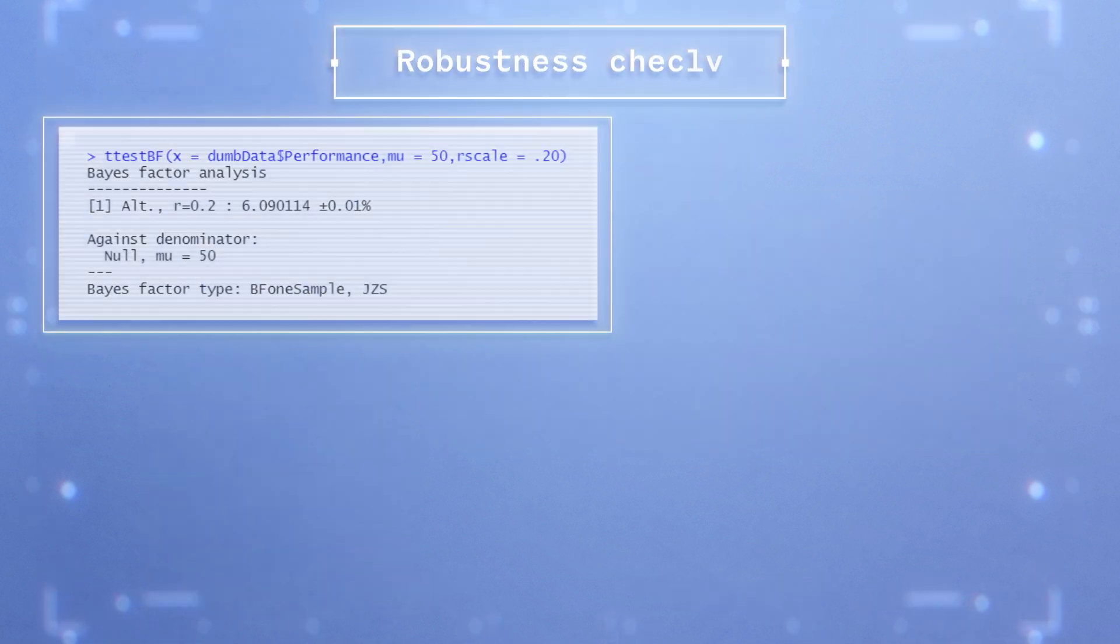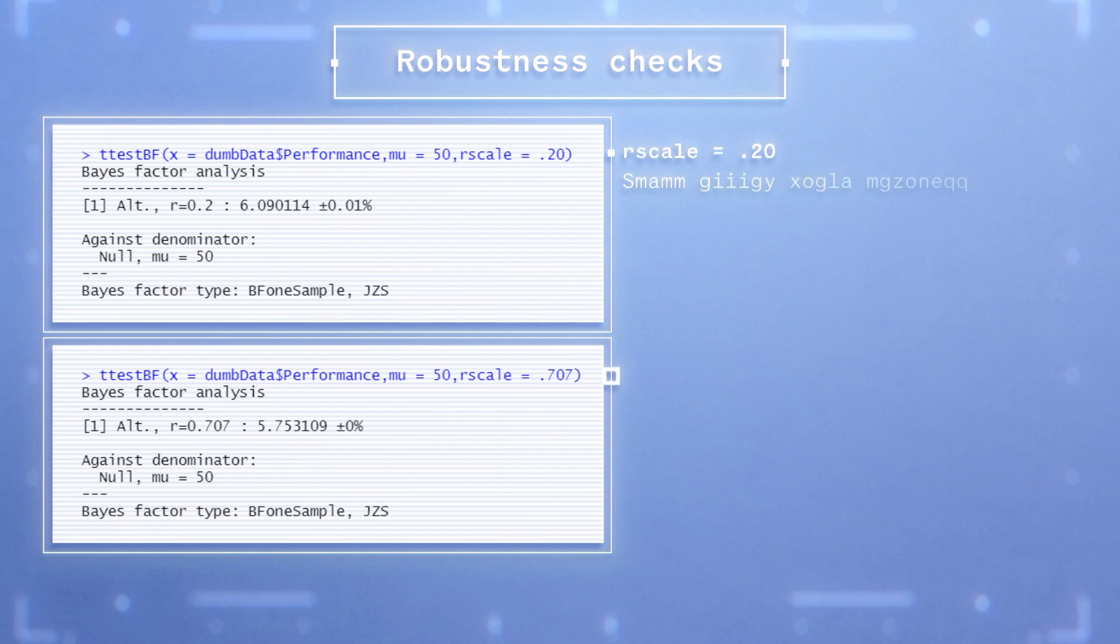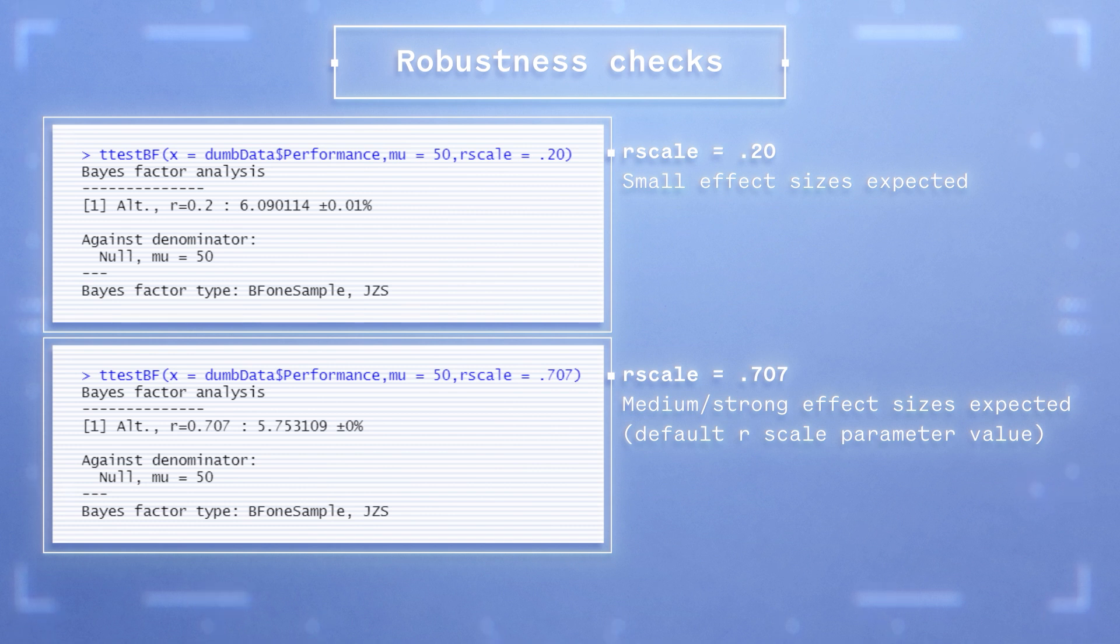Performing robustness checks in R requires using the same code and adjusting the prior with the rscale argument. As you can see, regardless of whether the prior assumes smaller or bigger effect sizes, the analysis yields quantitatively similar values, hence the result is robust.